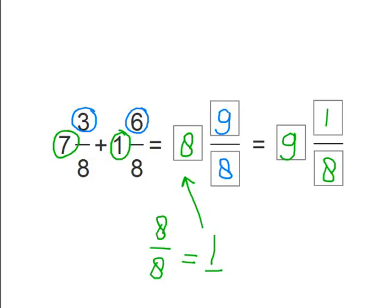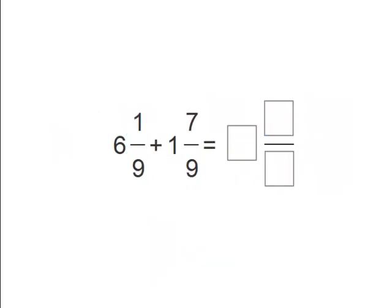Alright, let's do another problem. We see here 6 and 1 ninth plus 1 and 7 ninths. So let's first add the 6 and the 1. So 6 plus 1 is 7. And now we just need to add the 1 and the 7. So 1 plus 7 equals 8, and we keep the 9 the same. So this equals 7 and 8 ninths.